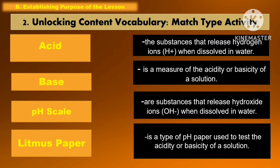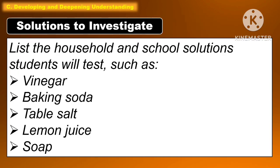In unlocking content vocabulary, we are going to use the match type activity. In developing and deepening understanding, we are going to explain the solutions to investigate. These are the list of household and school solutions that students will test, such as vinegar, baking soda, table salt, lemon juice, and soap.